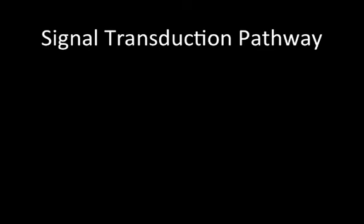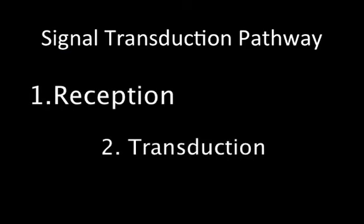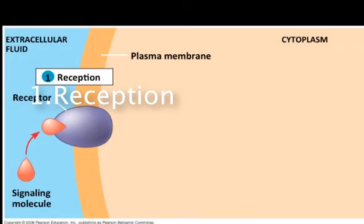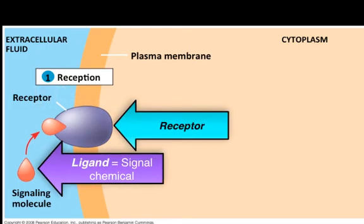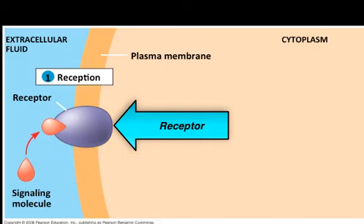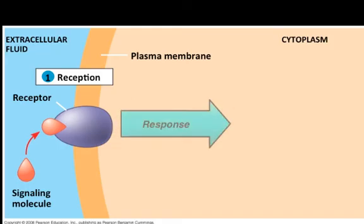The communication process starts a series of events for the receiving cell. These events are collectively called the signal transduction pathway. There are three steps: reception, transduction, and response. Reception involves a chemical signal called a ligand. The ligand must be complementary to the receptor on the receiving cell — like a key in a lock — and this changes the conformation of the receptor, which triggers an internal response.